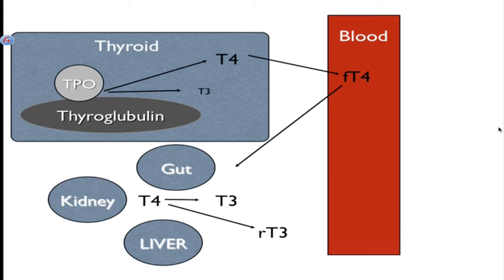However, as we said before, T4 can also be converted into reverse T3, which we really don't want a lot of that happening because if that happens, we're not going to get the thyroid effects. And then we see T3 and reverse T3 enter into the bloodstream again, and notice how T3 has that little F next to it. That means it's free T3, it's not bound to protein.